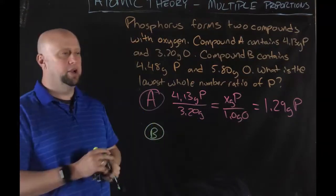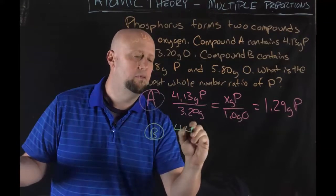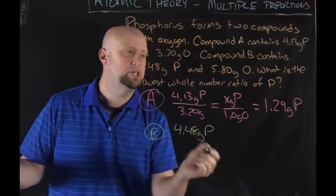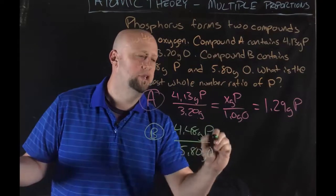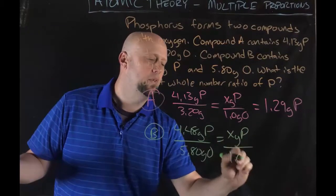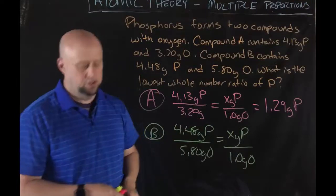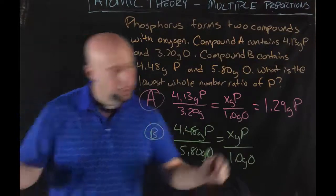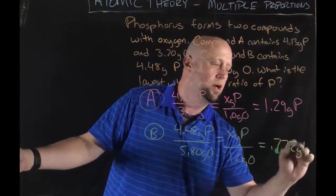Let's work out B real quick. Same scenario. We've got 4.48 grams of phosphorus over 5.80 grams of oxygen. I'm looking for my phosphorus again compared to one gram of oxygen. You can cross multiply, but it's not really necessary. I'm going to divide those two things out and I'm going to get .772 grams of phosphorus.